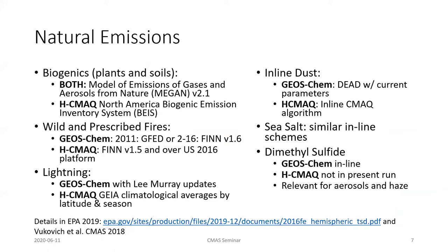For biogenics, both hemispheric CMAC and GeosChem use MEGAN version 2.1 as implemented in GeosChem. We produce the emissions in GeosChem, extract them, regrid and pass them to hemispheric CMAC. The soil NOx uses the Berkeley-Dalhousie nitrogen soil parameterization, also run in GeosChem and regridded. Within hemispheric CMAC over North America, we replaced the biogenics and soil NOx with the BEIS parameterization more commonly used in regional CMAC applications.